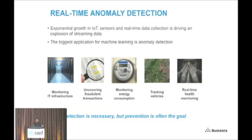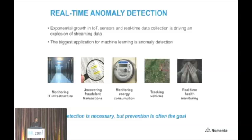If you think about the world of streaming analytics, as you all know, there's an exponential growth in the number of sensors with Internet of Things and real-time data collection. There's a very large explosion of data coming up. There's not a lot of machine learning technologies actually focused on this. Most of the work has been on databases and visualizations, but in the realm of learning, anomaly detection is one of the biggest applications, if not the biggest application, in streaming analytics.